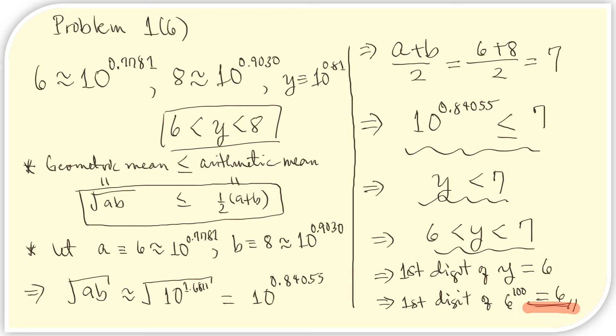Now we just have to choose between 6 and 7. To do this, let us apply what we know about geometric and arithmetic means. First, let us recall this relationship that the geometric mean must always be smaller than the arithmetic mean. Now, let us get the geometric mean and the arithmetic mean of 6 and 8. Let a be 6 and b be 8.